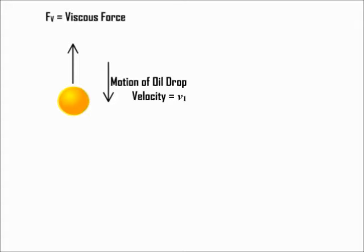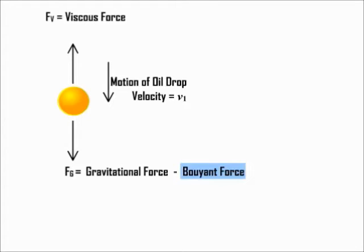Let us see what forces act on the oil drop. While calculating the gravitational force, we have to take into consideration the buoyant force. Now Fg, which is the gravitational force, is equal to 4/3 π r³ (ρ - ρ_air) g, where 4/3 π r³ is the volume of the oil drop and g is the acceleration due to gravity. ρ is the density of oil and ρ_air is the density of air.